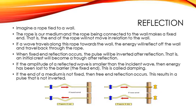The amplitude of the reflection wave is smaller than the incident wave, because energy is lost at the barrier at the fixed end. This is called damping. If the end of the medium is not fixed, then the free end reflection occurs. This results in a pulse that is not inverted.